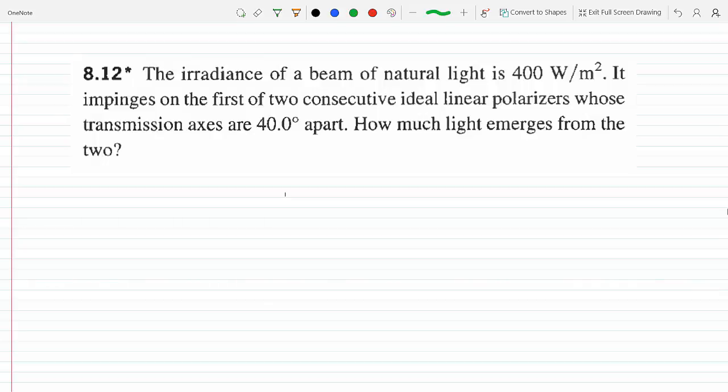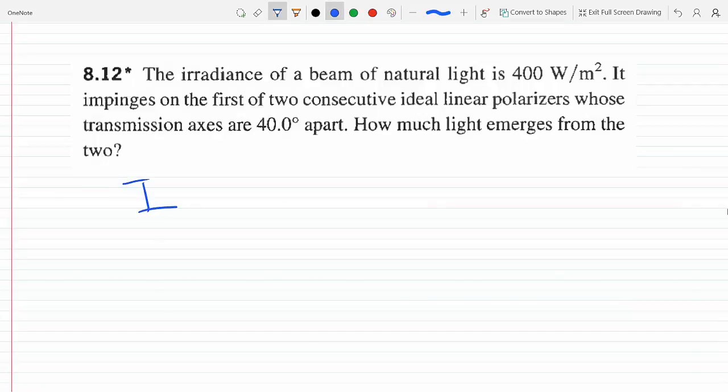Now if natural light impinges on an ideal polarizer, then the irradiance of the polarized light after that first polarizer will be I_0. This is basically from Malus's Law.